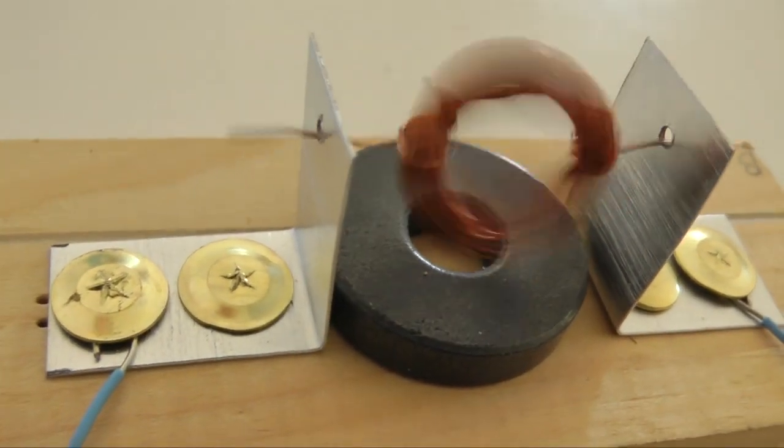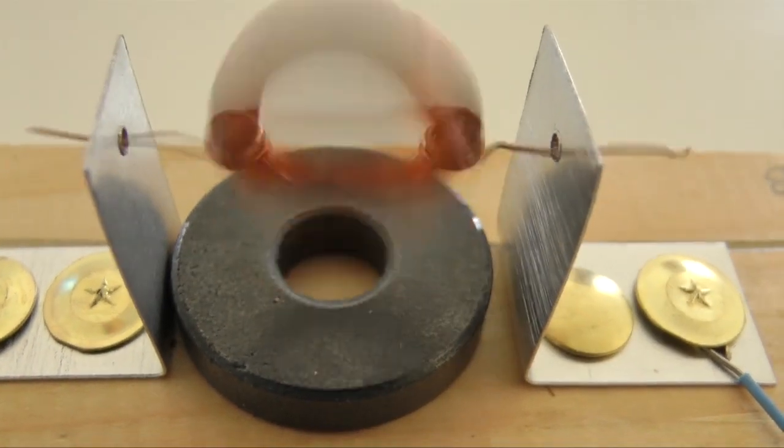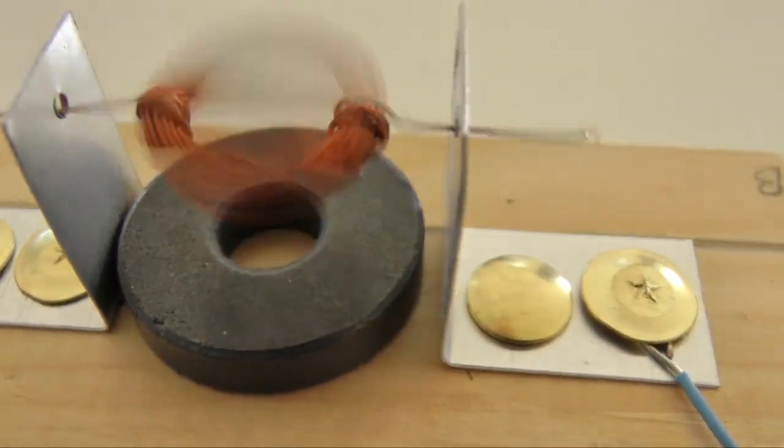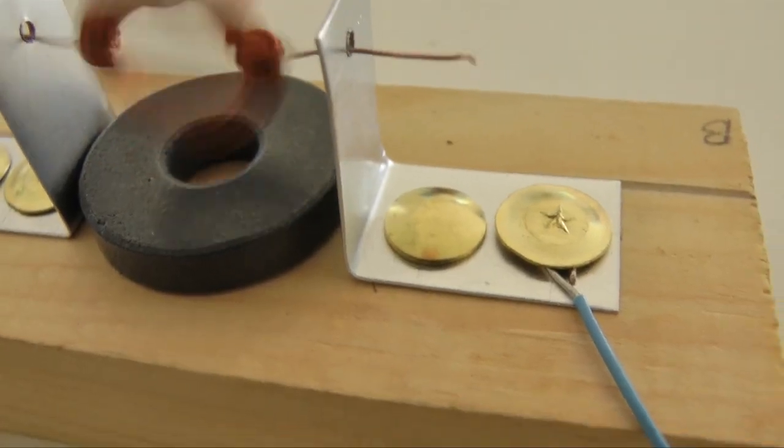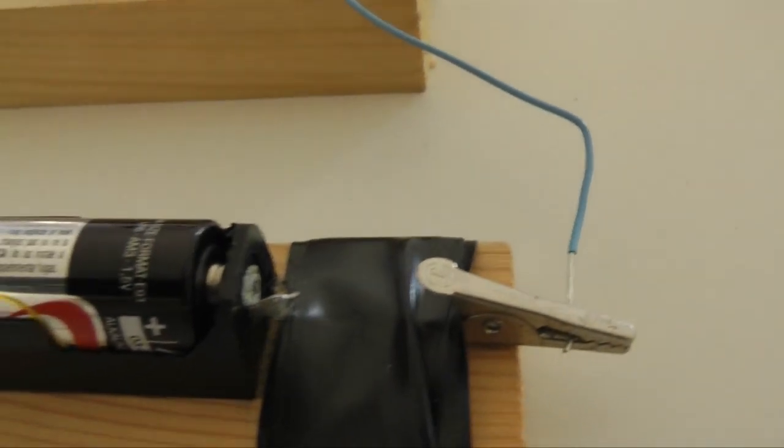The electrons travel through the coil creating a magnetic field that interacts with the magnetic field of the permanent magnet creating rotary motion. The circuit is completed with the connection back to the positive terminal of the battery.